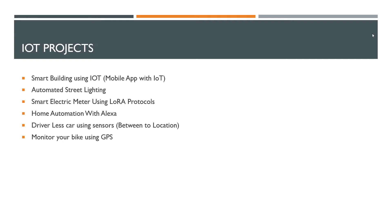How do you monitor the GPS? You can find devices in the market. You can create your own bike tracker and monitor it from your mobile.